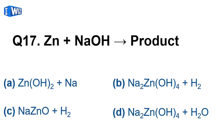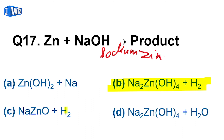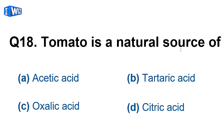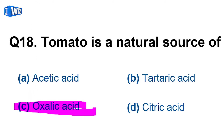Question number 17: zinc reacts with a base — zinc plus NaOH. A hydrogen gas will be released, and a salt will be formed called sodium zincate. Question number 18: tomato is a natural source of oxalic acid. Learn it.